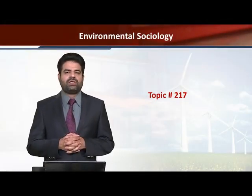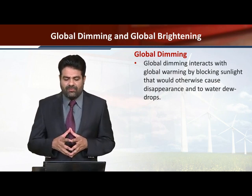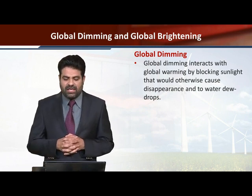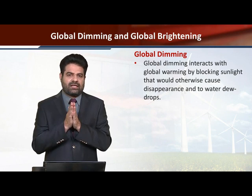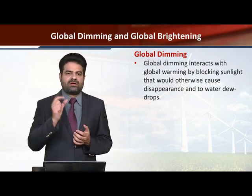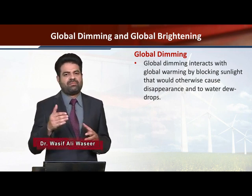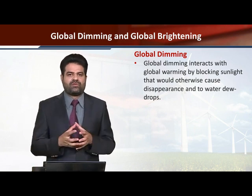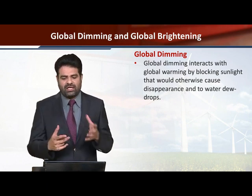Environmental Sociology Topic 217: Global Dimming and Global Brightening. Global Dimming interacts with global warming by blocking sunlight that would otherwise cause evaporation of water dew drops. Global Dimming is a phenomenon where direct sunlight cannot reach the earth's surface. It can't reach due to clouds of pollution, and global warming-like situations emerge in these scenarios.